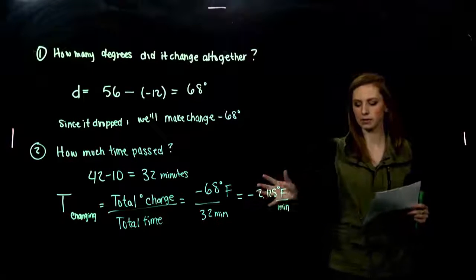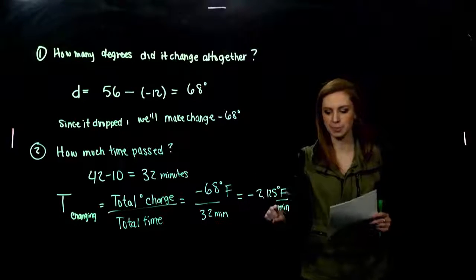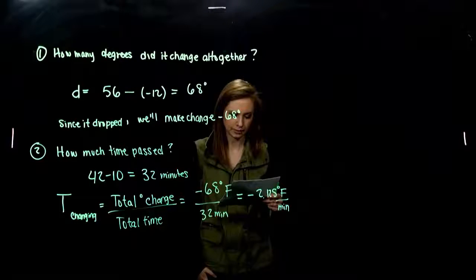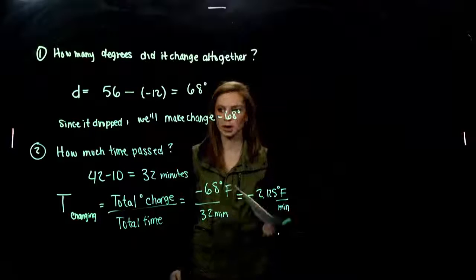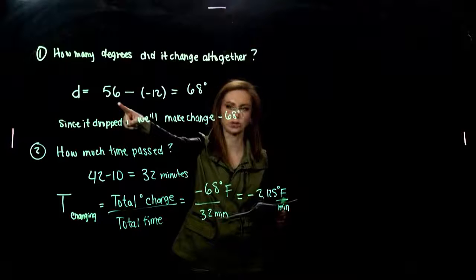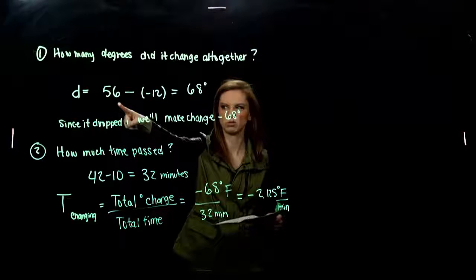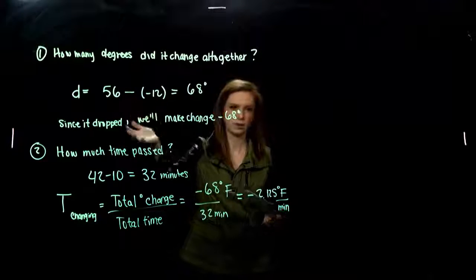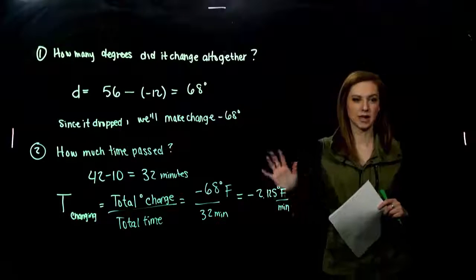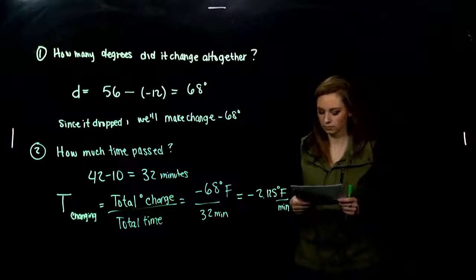So since we know that rate of change per minute, we could ask, okay, at 10:11, around what temperature was I at? I started at 56. A minute later, I lost another 2 degrees, a little bit more than 2. So I'm around like 54 degrees after one minute has passed. So that tells us a lot of information.